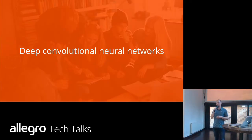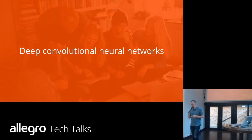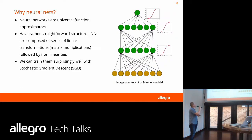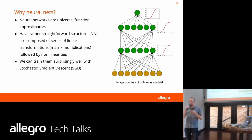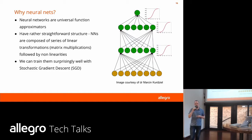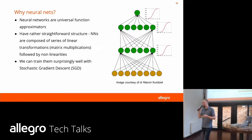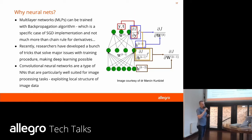Let's move on to the deep convolutional neural networks we applied. Why neural nets? Neural nets can approximate almost any function, provided they have proper size and structure. They are built as a series of linear transformations interleaved with non-linear activation functions. We can train them using backpropagation for multilayer perceptrons, which is a specific case of stochastic gradient descent.